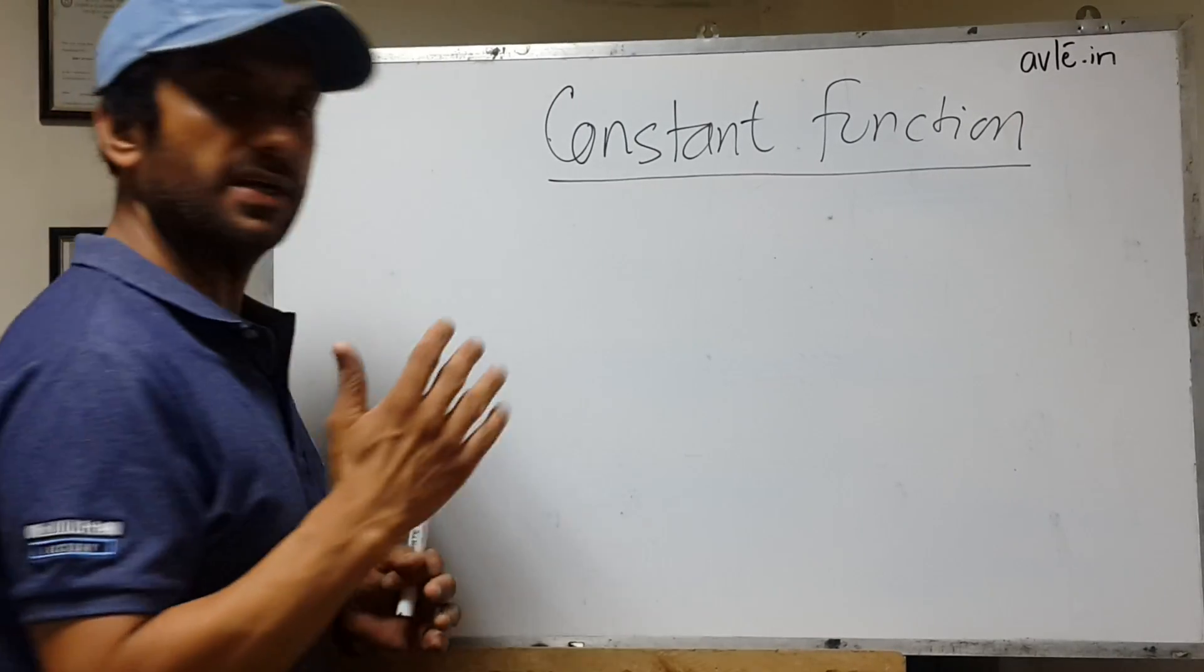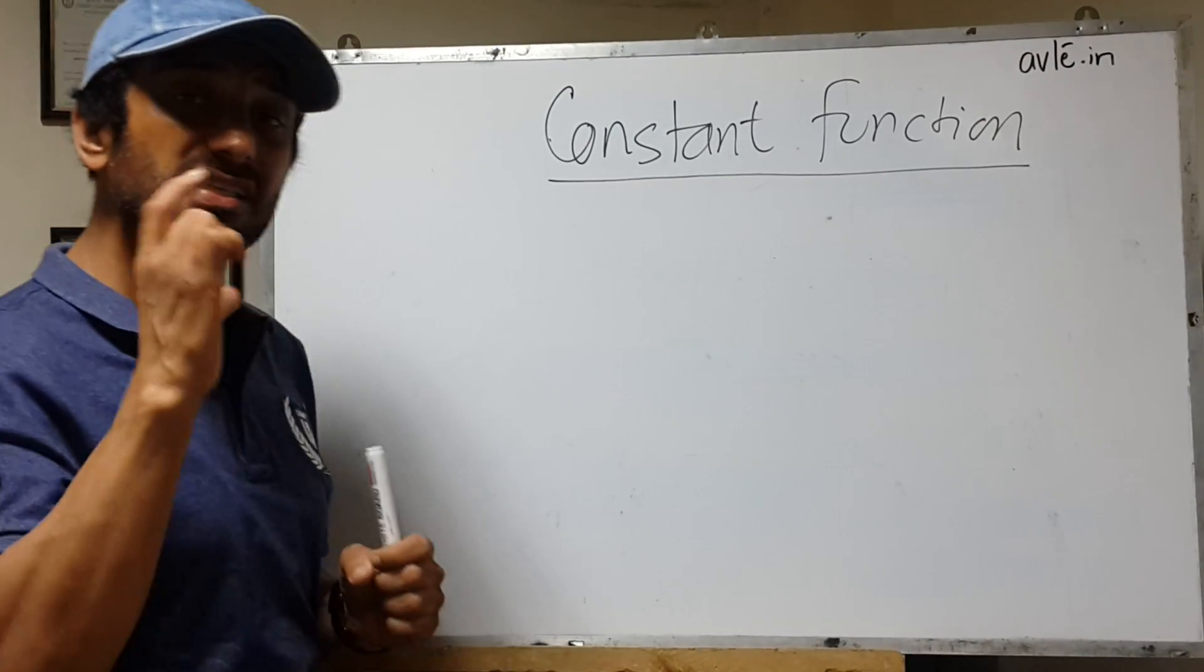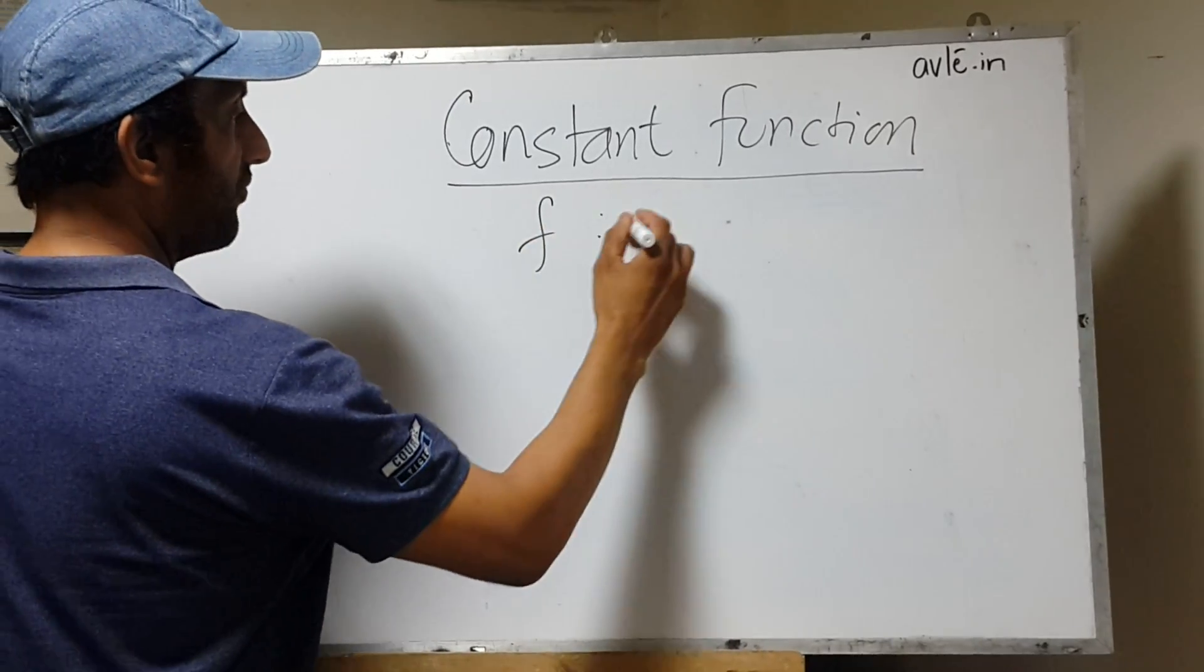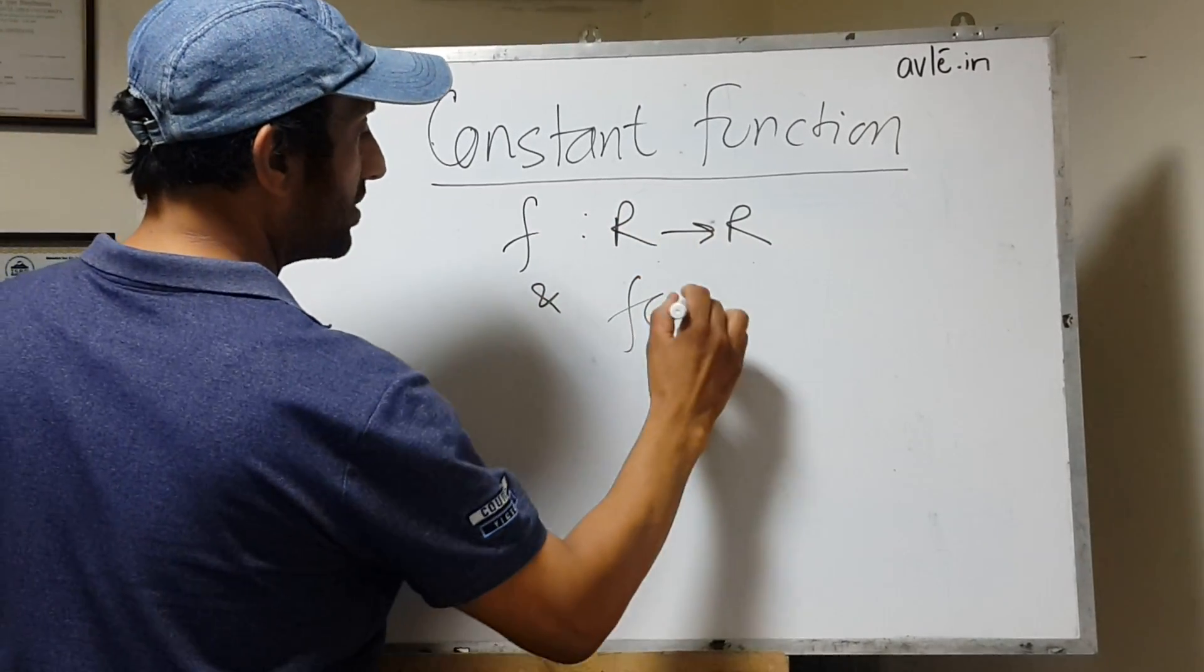Whatever you put as the input, as the pre-image, the output will always be the same number. Say, if I take the function f: R → R and f(x) = 5,